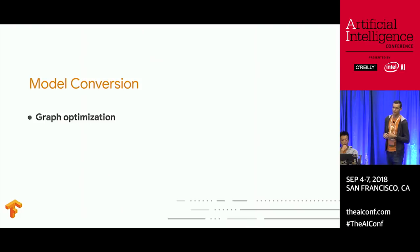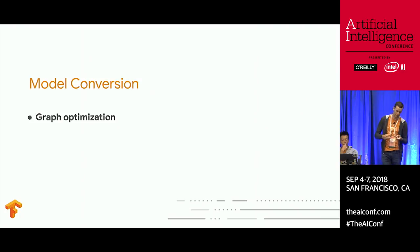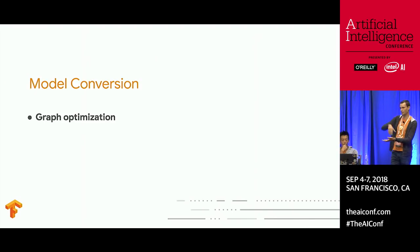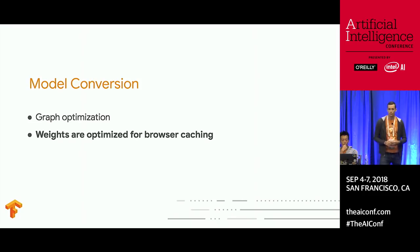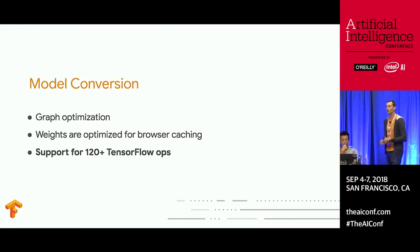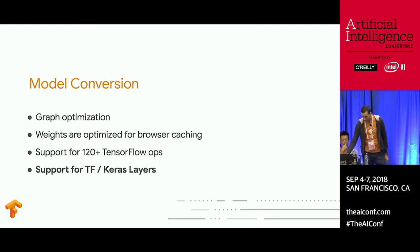In the model conversion step, saved models have many graph paths — inference, training, and data ops if you're using the tf.data pipeline. We extract the inference graph, collapse ops as needed, and run optimizations. For saved models, we shard weights into 4-megabyte chunks that cache nicely with modern browsers, so it's only a one-time fetch for larger models. We support 120-plus TensorFlow ops in that conversion step and are always adding more, with tf Keras layers also supported.